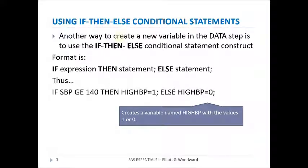The first item we're going to look at is using If-Then-Else Conditional Statements. This is a way to create a new variable within the data step using If-Then-Else Conditional Statements. For example, If expression Then some statement, Else some other statement. More specifically, If systolic blood pressure greater than or equal to 140, then we're going to create a new variable called HighBP set equal to 1. Else, if that condition was not met, we're going to create HighBP equal to 0. So this allows us to create the new variable HighBP with two values, 1 or 0, based on that condition.